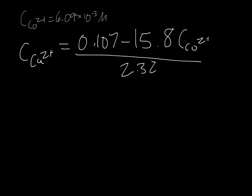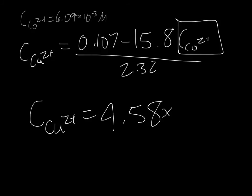Now using the value we solved for the concentration of cobalt, we can plug that into our solved expression for the concentration of copper 2+. Plugging in 6.09 times 10 to the minus third for cobalt 2+ and solving gives us the concentration of copper: 4.58 times 10 to the minus third molar.